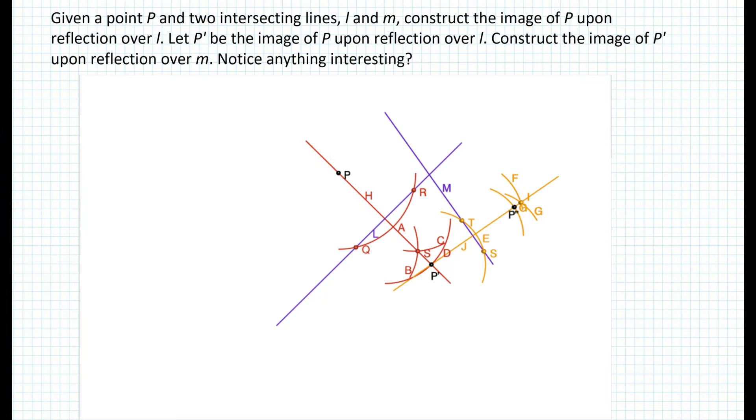Now what do you notice here? Something interesting occurs here, right? If you compare point P, P prime and P double prime, that now the intersection of line L and M become the point of rotation. So if you draw a circle, you can see that point P, P prime and P double prime, they are all equidistant from point R.